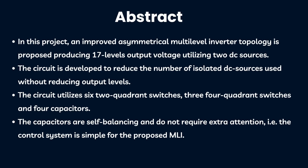This is the abstract for this project. An improved asymmetrical multilevel inverter topology is proposed, producing 17 levels of output voltage by utilizing 2 DC sources. The circuit is developed to reduce the number of isolated DC sources used without reducing output levels. The circuit consists of 6 two-quadrant switches, 3 four-quadrant switches, and 4 capacitors.